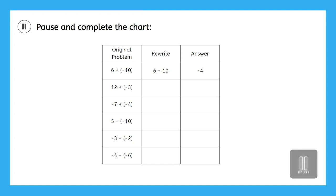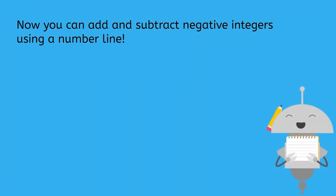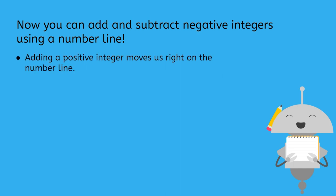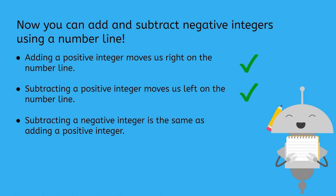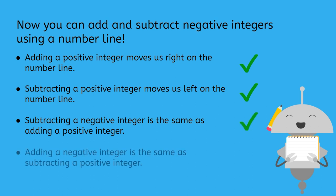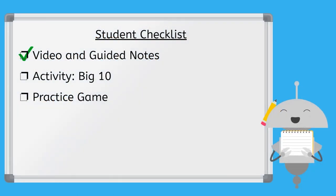Pause the video and complete the chart in your PDF using the new rules we've learned. Any problem that adds a negative can be rewritten with just subtraction, and any problem that subtracts a negative can be rewritten with just addition. Great job. Now you can add and subtract negative integers using a number line. Remember that adding a positive integer moves us right on the number line, and subtracting a positive integer moves us left. We also discovered that subtracting a negative integer is the same as adding a positive integer, and adding a negative integer is the same as subtracting a positive integer. After this video is over, you'll complete the activity in your PDF and then the practice game. In our next video, we're going to continue our work with negative numbers. I'll see you next time!